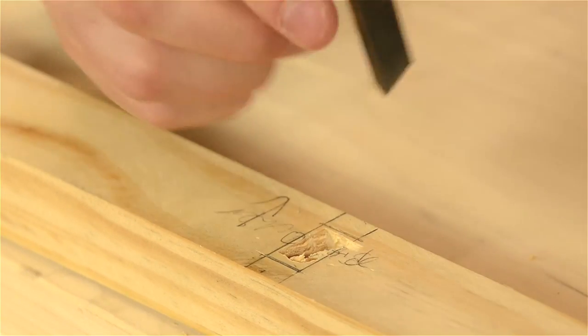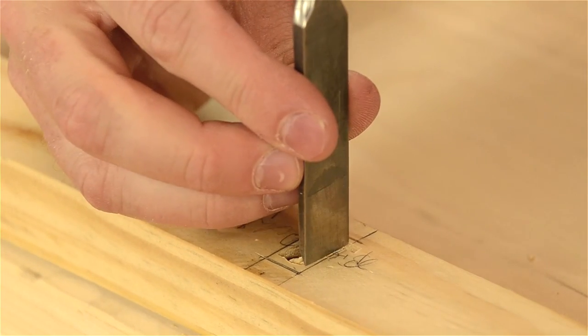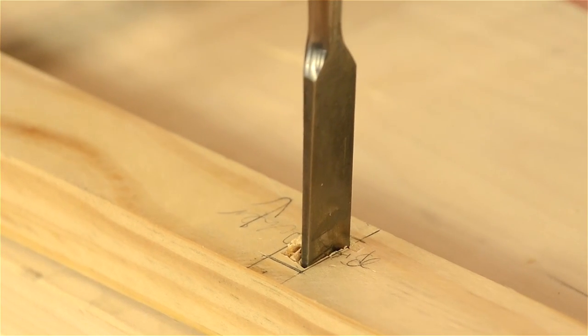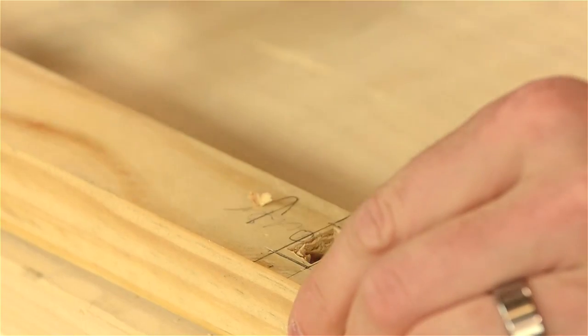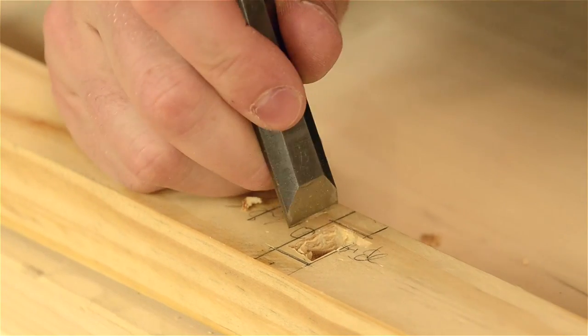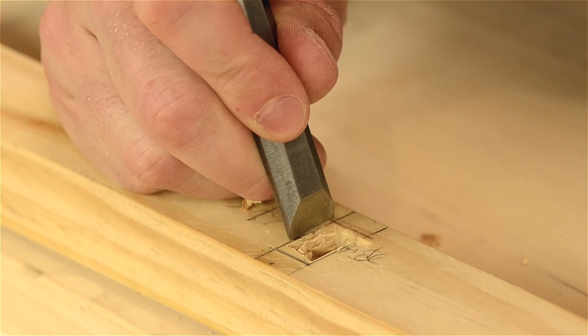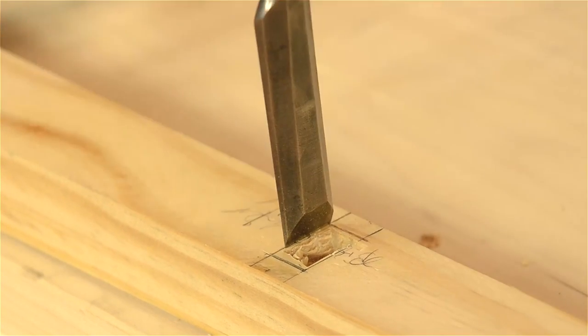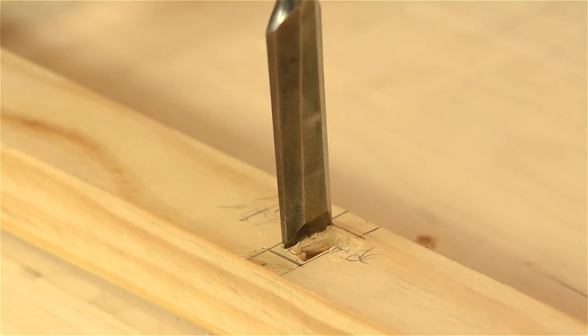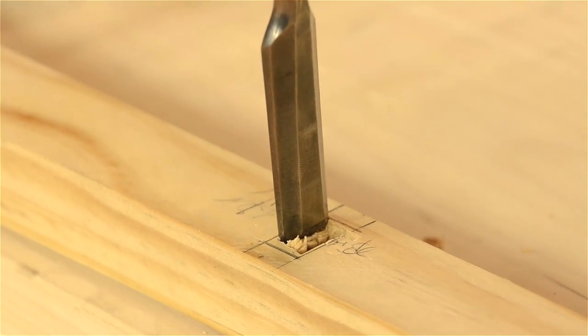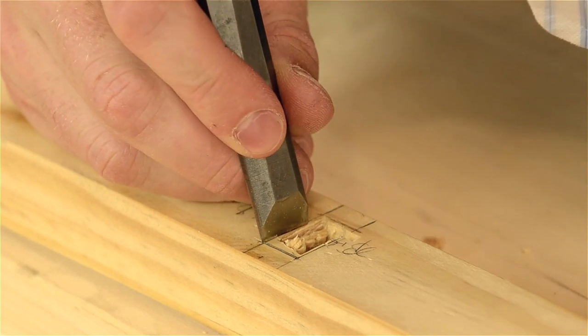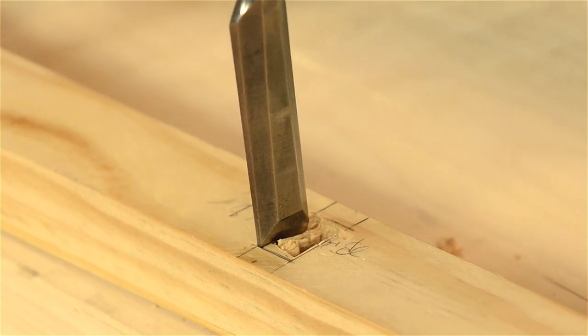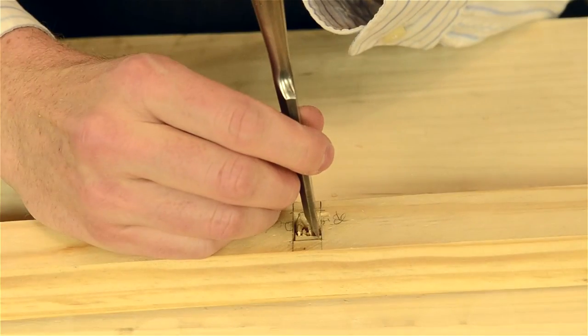Come away from the line, we'll just remove some of the waste. Grab your mallet. You don't have to go all the way through, we'll come from the other side as well. Chop down through and then come up to the line. I like to lay it in the corner here, set it in there, and then we'll come from this side.